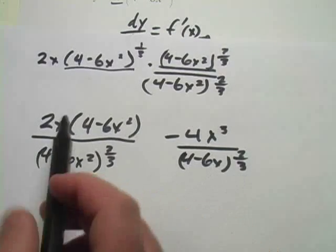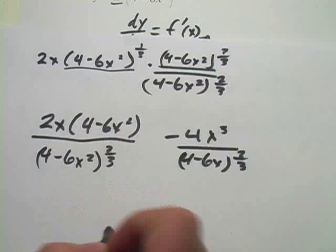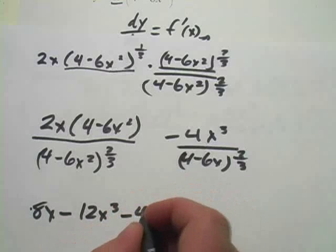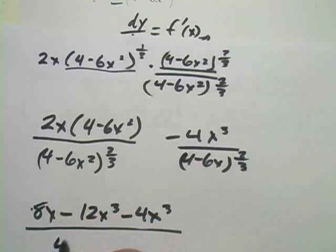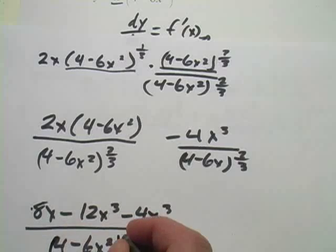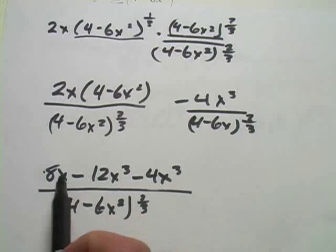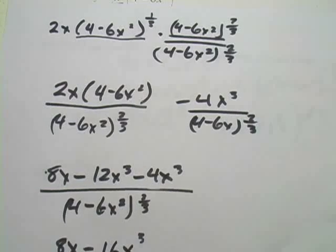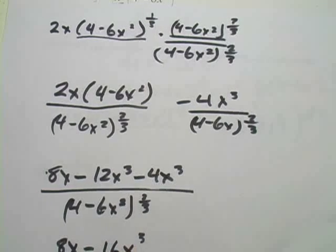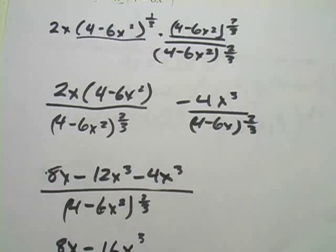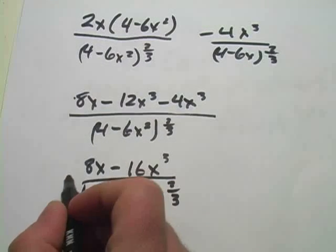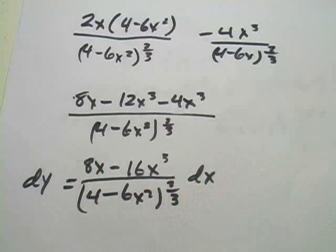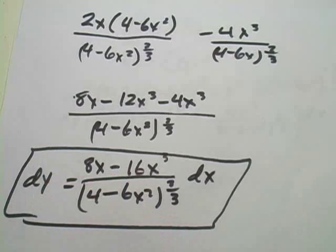Our other chunk is -4x³ / (4-6x²)^(2/3). With common denominators, we can do the subtraction. Multiplying through the 2x first, we get (8x - 12x³ - 4x³) / (4-6x²)^(2/3), which simplifies to (8x - 16x³) / (4-6x²)^(2/3). Remember, dy is the derivative times dx, and that is our answer.